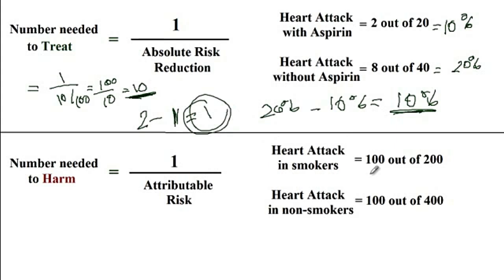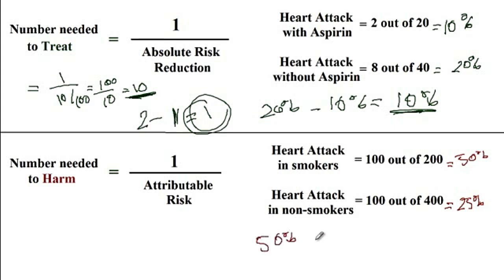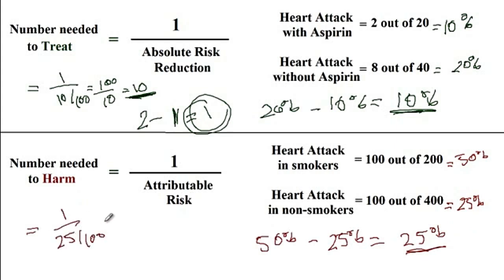Now for number needed to harm: the risk of heart attack in smokers is 100 out of 200, which is 50%. The risk in non-smokers is 100 out of 400, which is 25%. The attributable risk from smoking is 50% minus 25%, which equals 25%. So the number needed to harm = 1 divided by 25% = 100 divided by 25 = 4. If four patients start smoking, one additional patient will develop a heart attack.